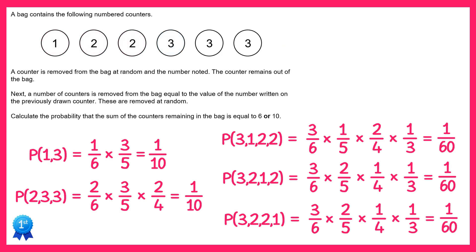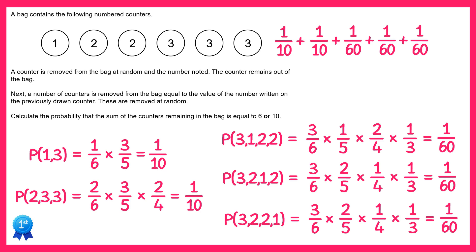So these are all of my possibilities, so I just need to add up all of these: a tenth, plus a tenth, plus a 60th, plus a 60th, plus a 60th, plus a 60th, which gives you 1 quarter. And that's the answer to the question.